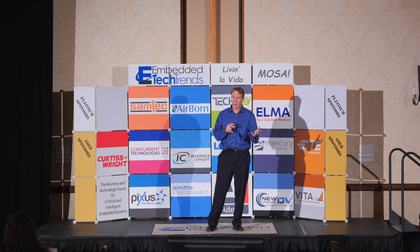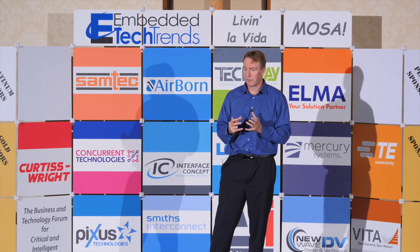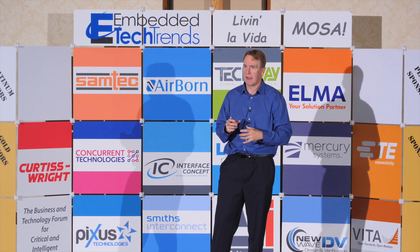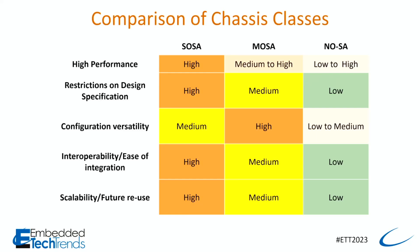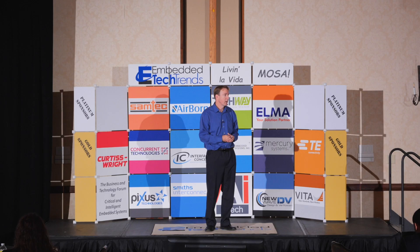To compare these different chassis classes: I'd rank SOSA the highest on many elements like high performance, really restricting the standards to keep things focused and narrow, which makes interoperability a lot easier along with scalability and reuse. I would give MOSA higher marks on versatility — you can reach a lot of applications. All the different elements have their advantages, and we're happy to work with customers on whatever their approach is and tailor the solution to their needs. Are there any questions?